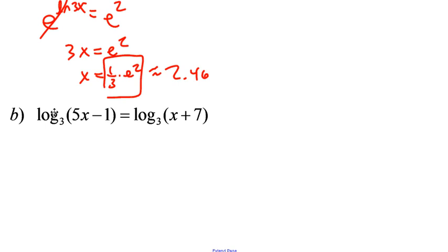Look at this. If they both have the same base on both sides, meaning the same base in our log, basically that means we're taking just 5X minus 1 and that equals X plus 7.